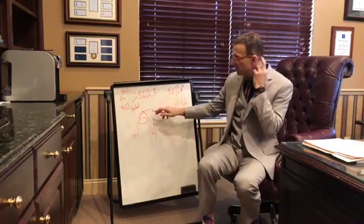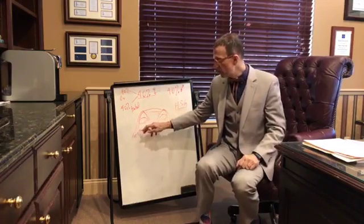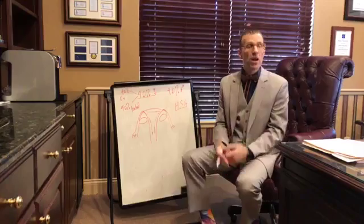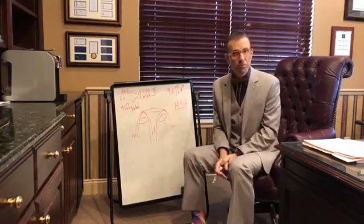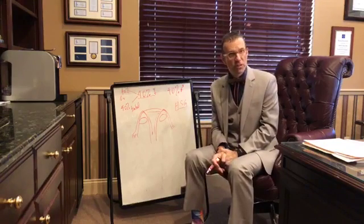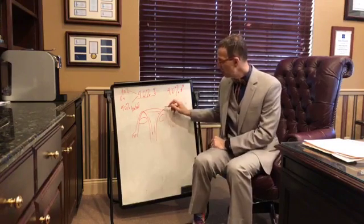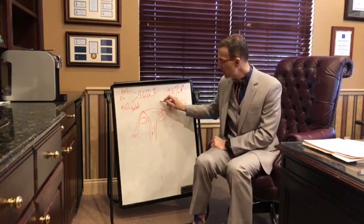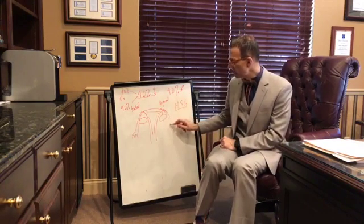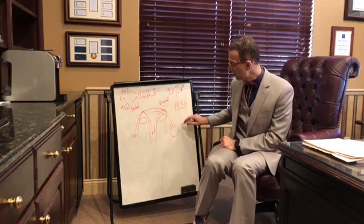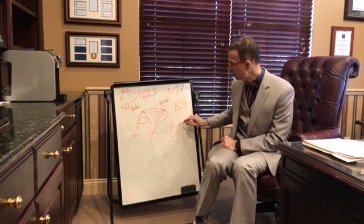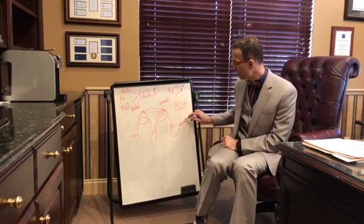This is a little cartoon of the uterus, and these are the fallopian tubes here, and the ovary. When we do this procedure, there are two places the tubes can typically be blocked: usually at the beginning, and that's called proximal, or usually at the end, which is the distal portion.